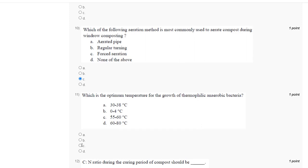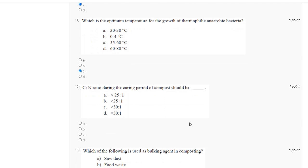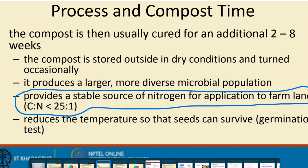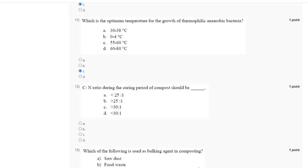Question number 12: what should be seen during the curing period of compost? It should provide a stable source of nitrogen for application to farmland, with a C:N ratio less than 25:1. The correct answer is option A.